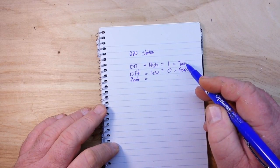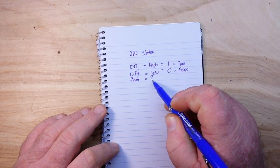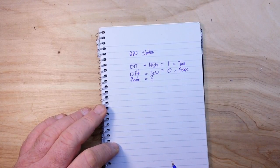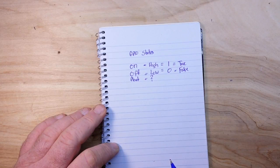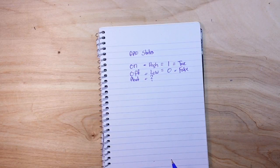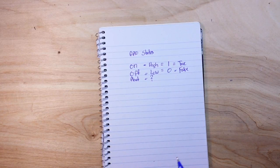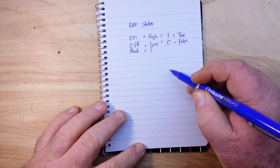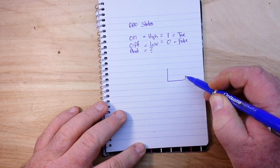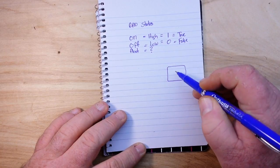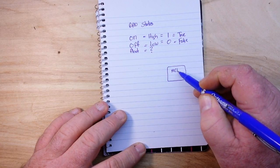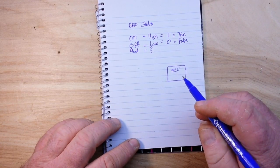In the floating state we can't quantify whether it's high, low, one, zero, true or false, because we just don't know. It can be anything or anywhere in between. So when we have our microcontroller here, our Arduino, we just call it the MCU because that sounds pretty cool,